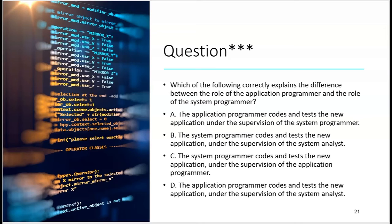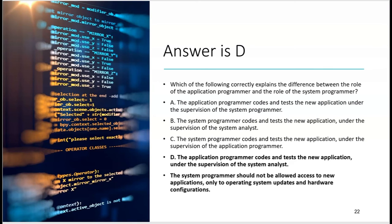Which of the following correctly explains the difference between the application programmer and the system programmer? A) The application programmer codes and tests the new application under the supervision of the system programmer — no. B) The system programmer codes and tests the new application under the supervision of the systems analyst — no. C) The system programmer codes and tests the new application — no. D) The application programmer codes and tests the new application under the supervision of the system analyst — yes. The system programmer should not have access to new applications, only to operating system updates and hardware configurations.